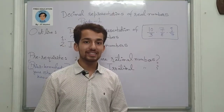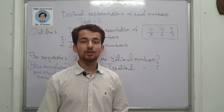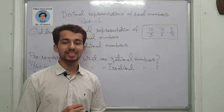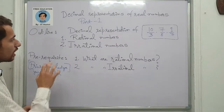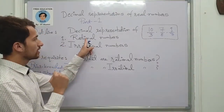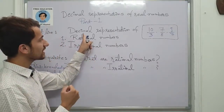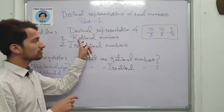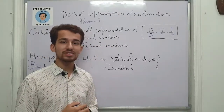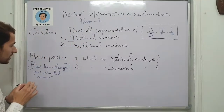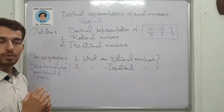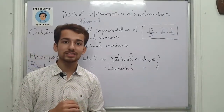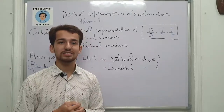The title of today's lecture is 'Decimal Representation of Real Numbers.' We want to represent rational numbers and irrational numbers in decimal form. In today's lecture we'll be covering only the first part — how to represent rational numbers in their decimal representations. You should already know what rational and irrational numbers are, so refer to previous lectures if needed.